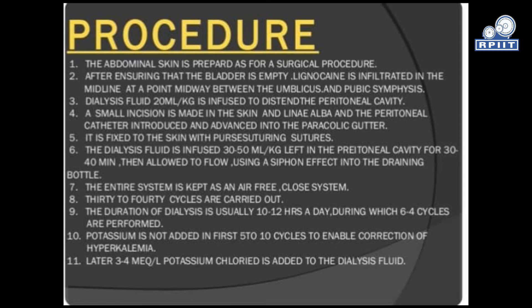Dialysis fluid of 20 ml per kg is infused to distend the peritoneal cavity. A small incision is made in the skin and the peritoneal catheter is introduced into the peritoneal cavity. It is fixed to the skin with a purse-string suture. The dialysis fluid of 30–50 ml per kg is left in the peritoneal cavity for 30–40 minutes, then allowed to flow using a siphon effect into the drainage bottle. The entire system is kept as an air-free closed system. 30–40 cycles are carried out; the duration of dialysis is usually 10–12 hours a day.